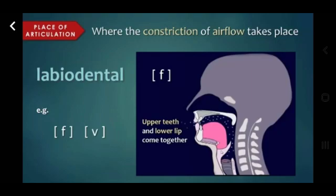Labiodental. It means the constriction of airflow takes place when the upper front teeth and the lower lip come together. That's why we call them labio means lips and dental teeth. The sounds are /f/ and /v/. Lower lip and upper front teeth form the area where the constriction of airflow takes place, where the obstruction of airflow takes place.